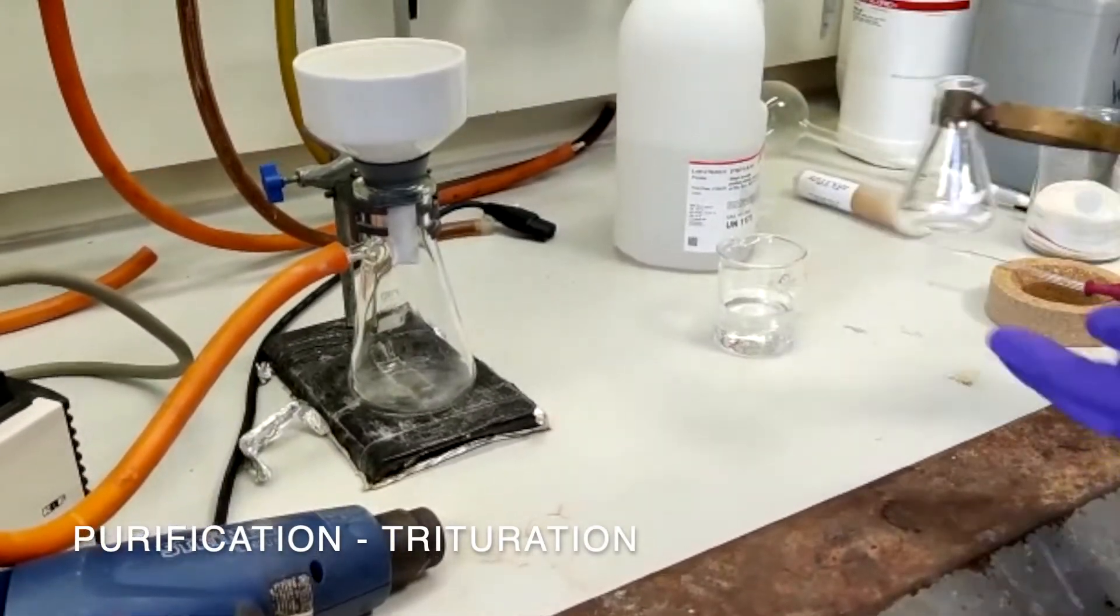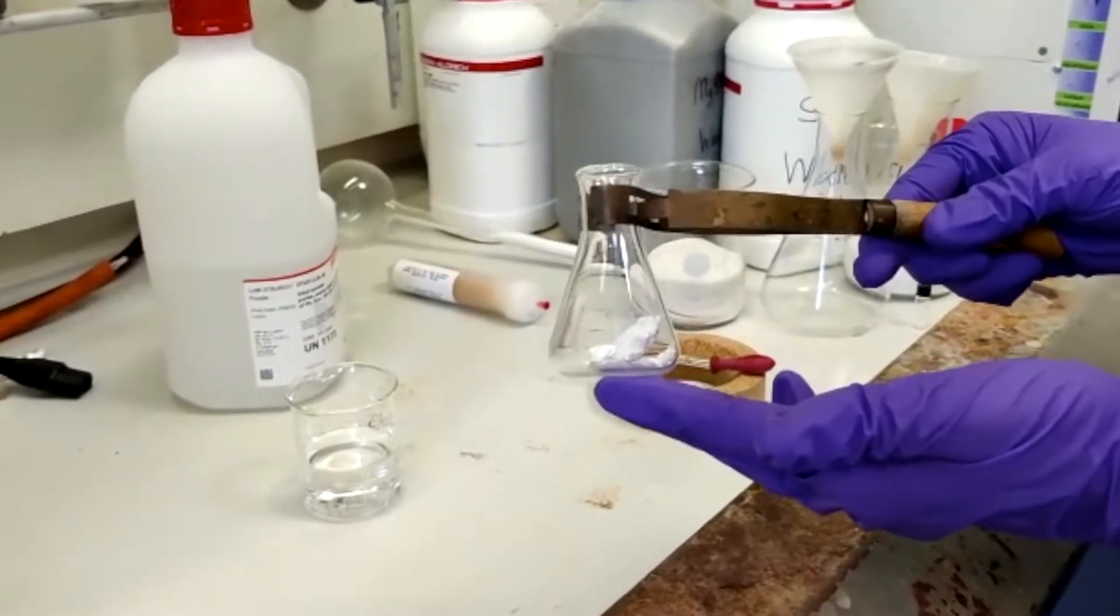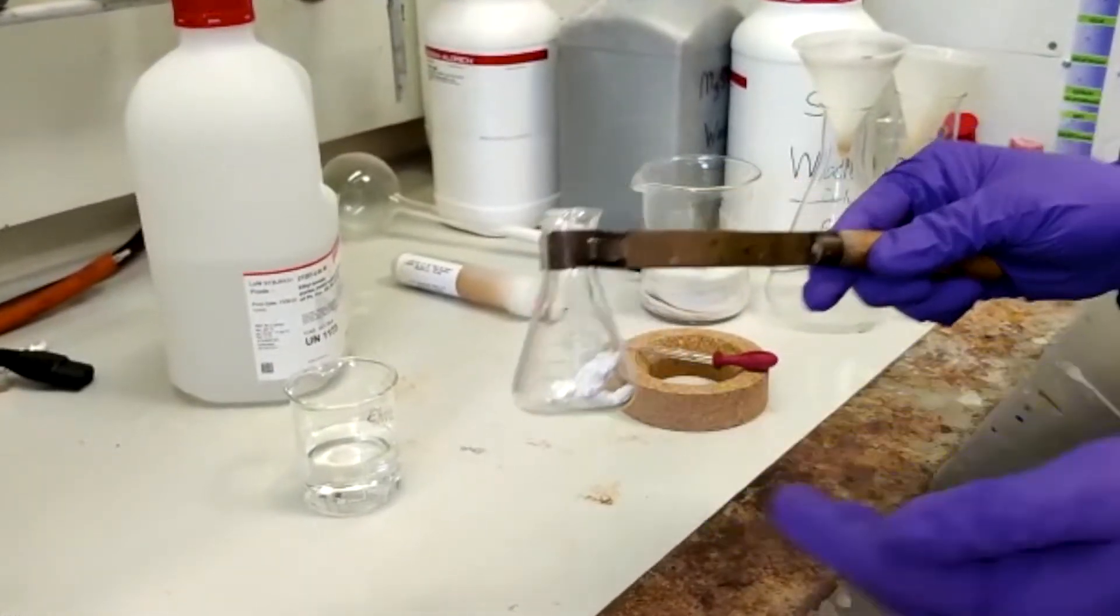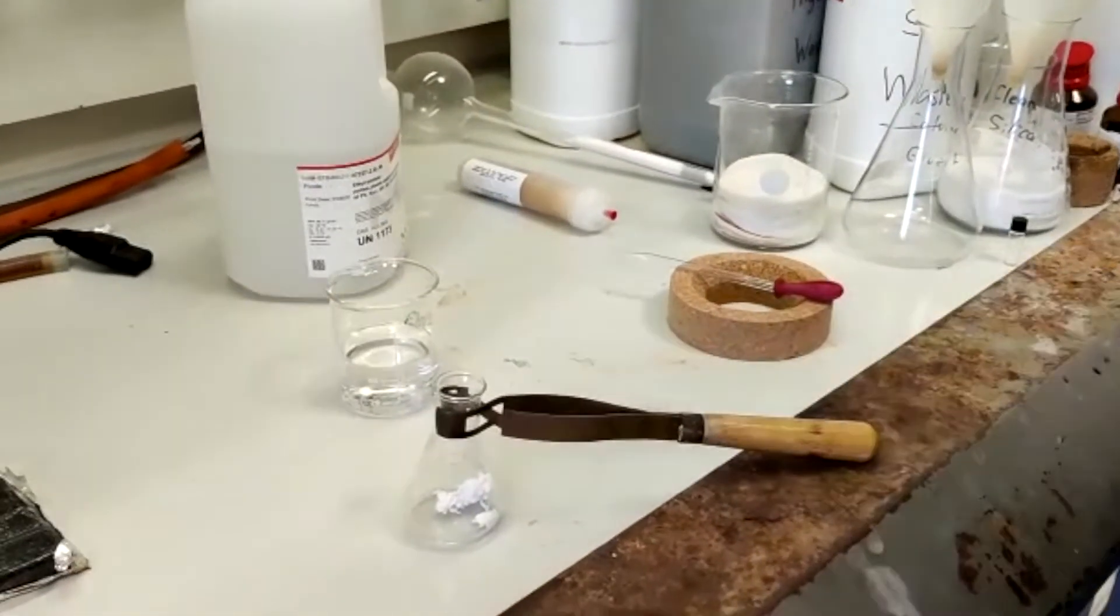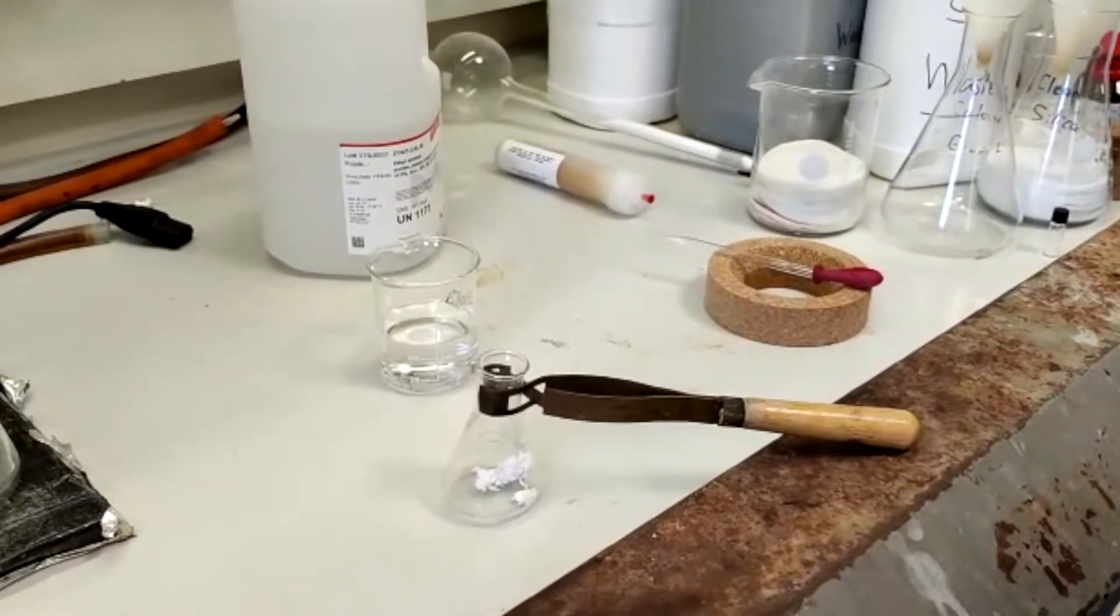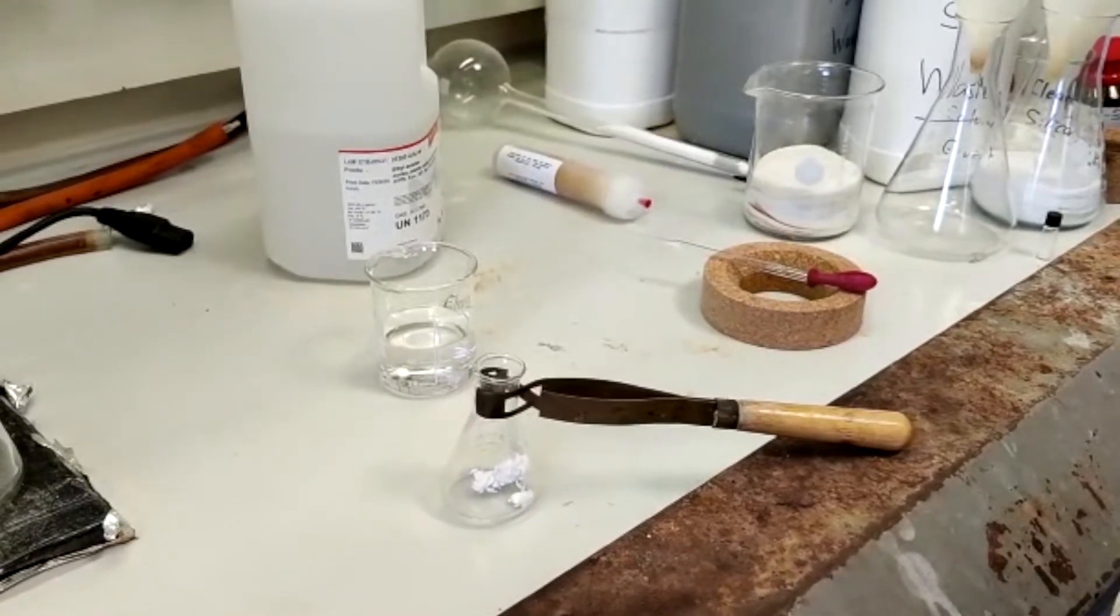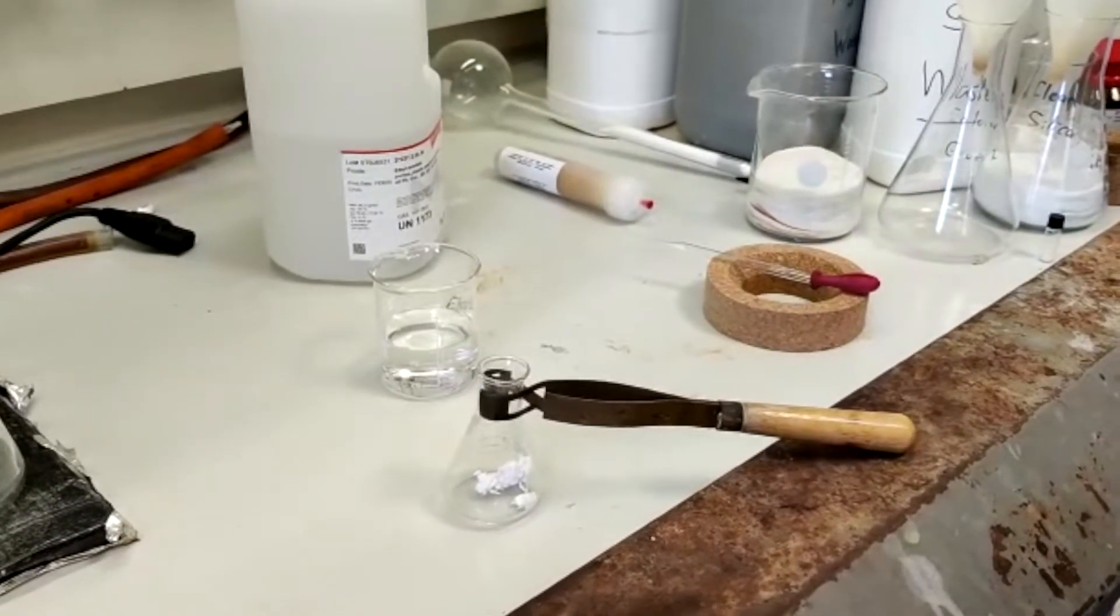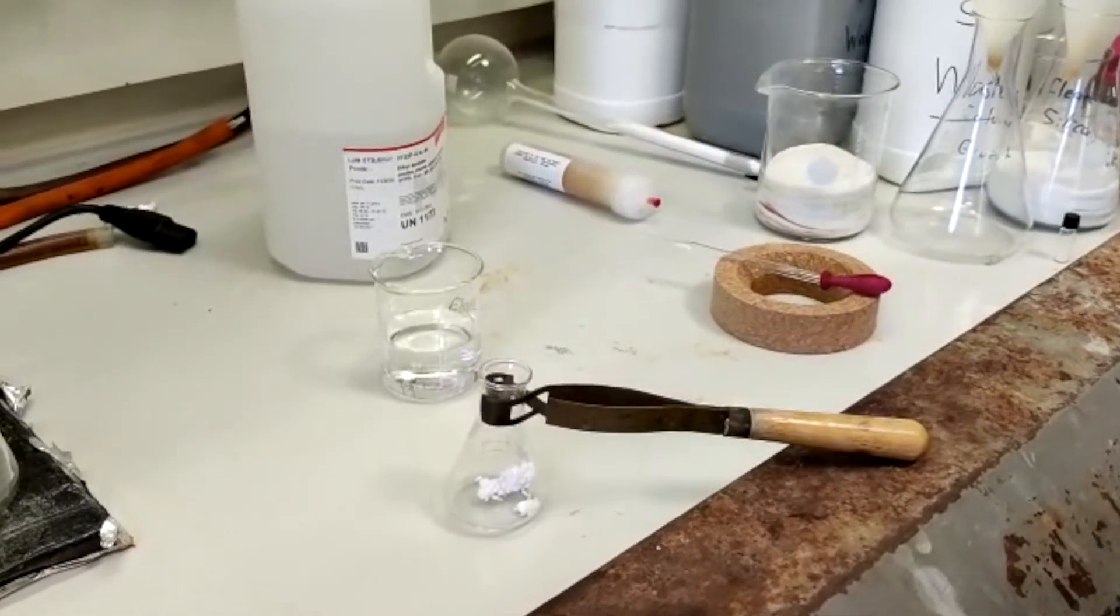As you can see, we've taken the white solid that we got from the first filtration, and we've transferred it to a small conical flask. What we're now going to do is we're going to triturate it. This is very similar to doing a recrystallization, but a lot simpler, in that we will add a solvent that our product is not soluble in, but that our impurities are. We will heat it up, and our product will not dissolve, it will remain a solid, and then we'll just let it cool down, cool it to zero degrees, and filter it in the same way that we have before.